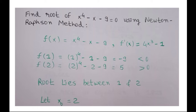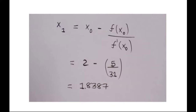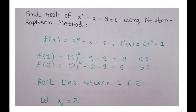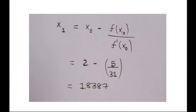Taking x0 equal to 2 and finding out our first iteration. x1 will be equal to x0 minus f of x0 upon f dash of x0. f of 2 is 5 and f dash of 2 will be 4 into 2 cube minus 1, which comes out to 31. So x1 is equal to 1.8387.